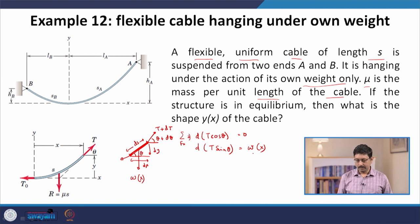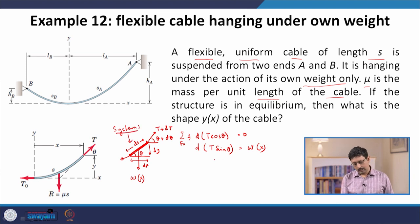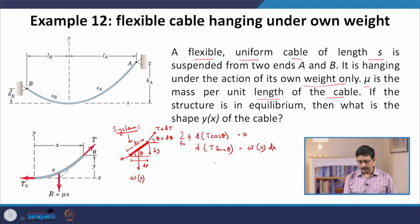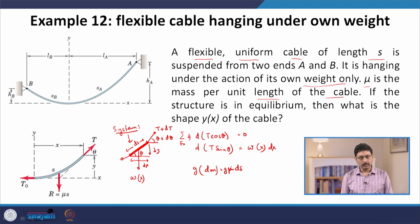In this example, W is the weight of the slice of the rope, which is our system. This W equals μ times g times ds, since the mass per unit length is μ and the length of the slice is ds. Multiplying by gravitational acceleration gives dW, the weight of this mass.